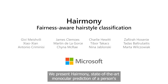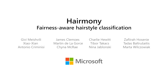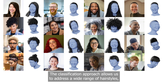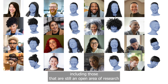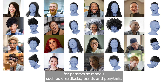We present HairMoney, a state-of-the-art monocular prediction of a person's hairstyle for digitisation and enrolment into virtual experiences. Our method matches a person's hairstyle with a library of assets. The classification approach allows us to address a wide range of hairstyles, including those that are still an open area of research for parametric models, such as dreadlocks, braids and ponytails.